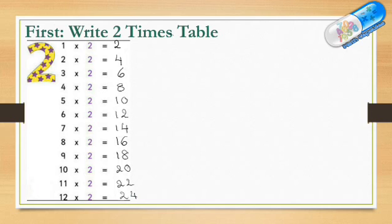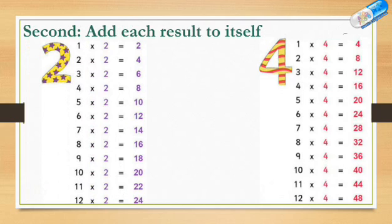So the first thing is to write the 2 times table. The second step is to take any number multiplied by 2, then add it to itself to get how it's multiplied by 4. For example,